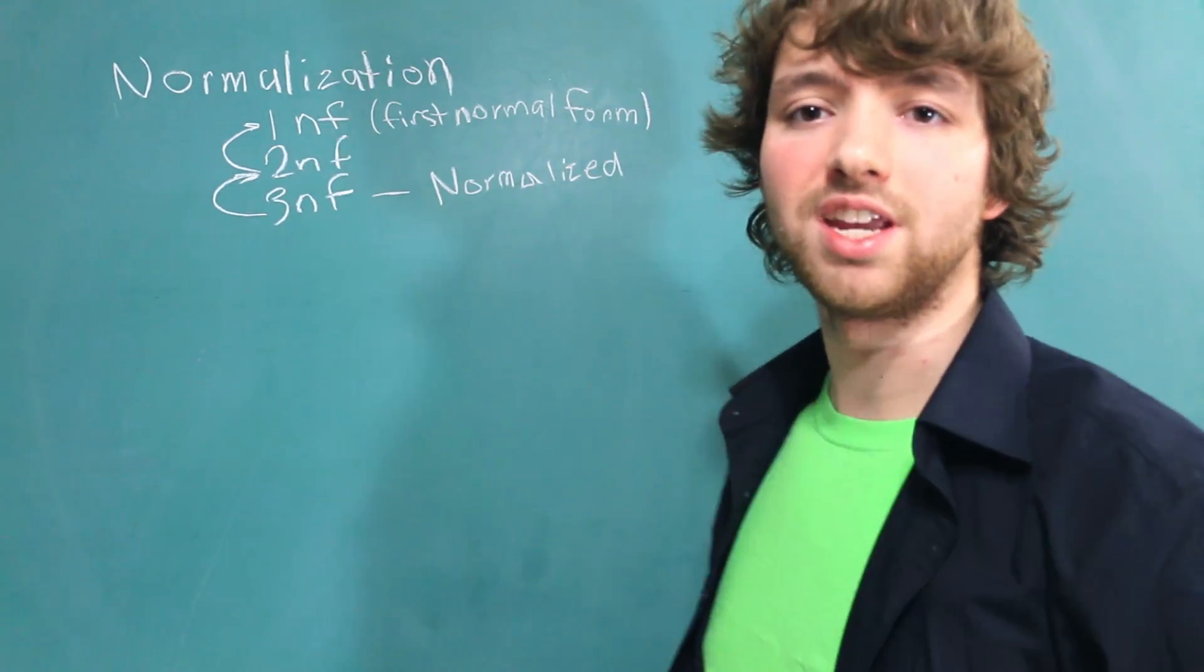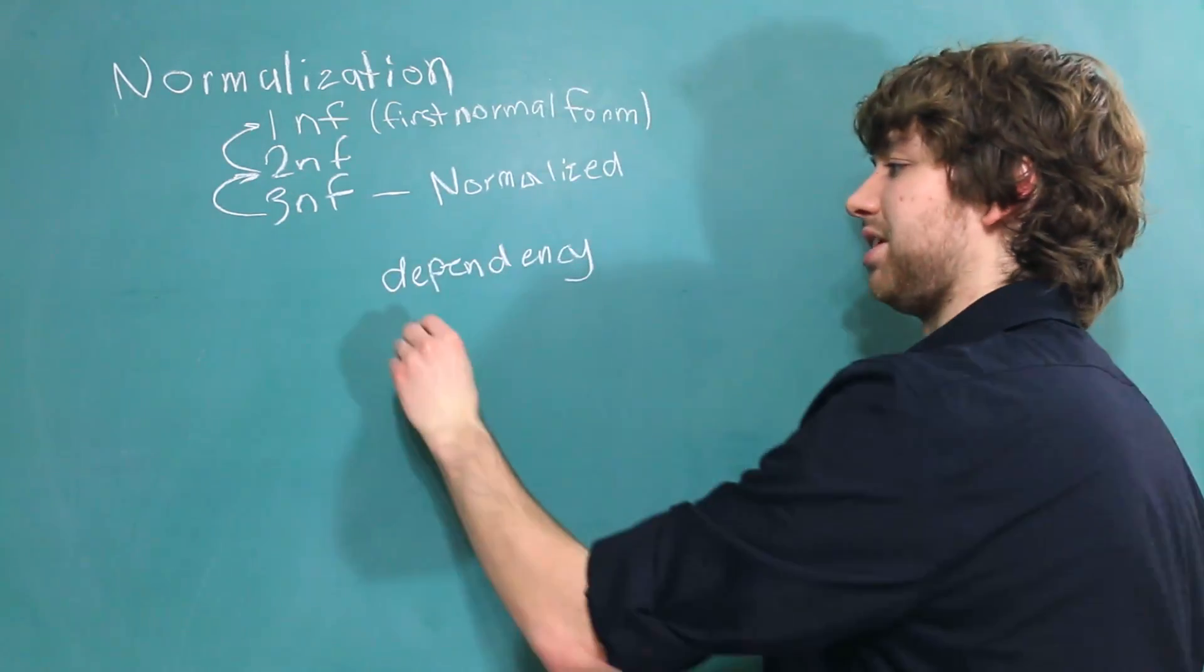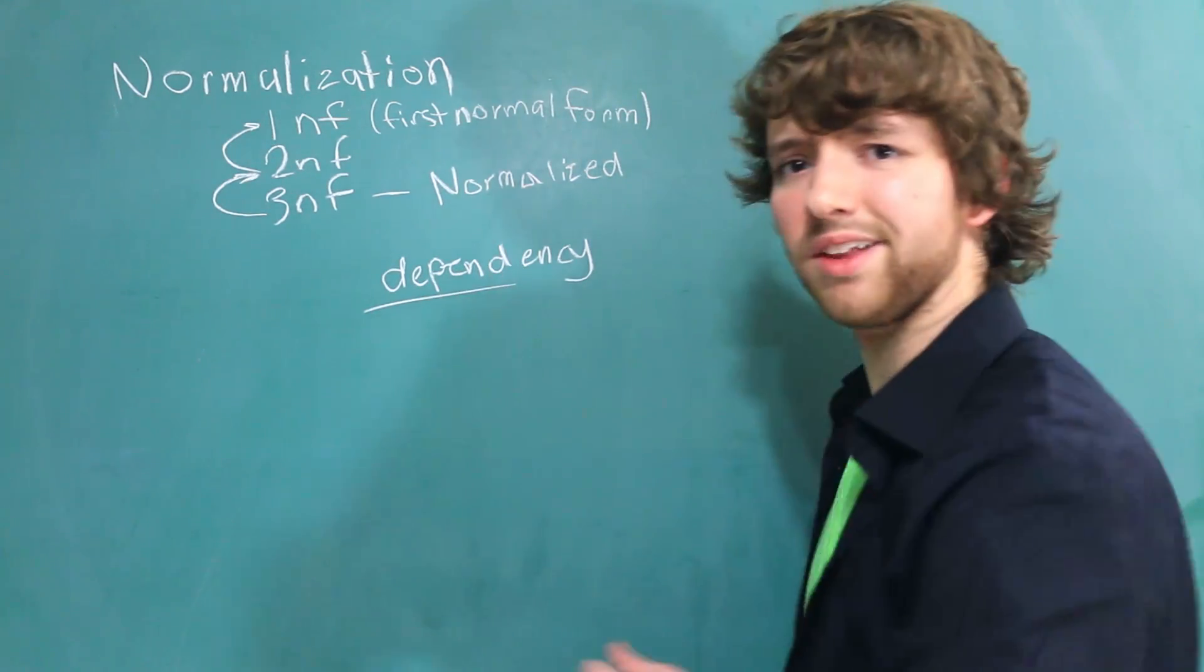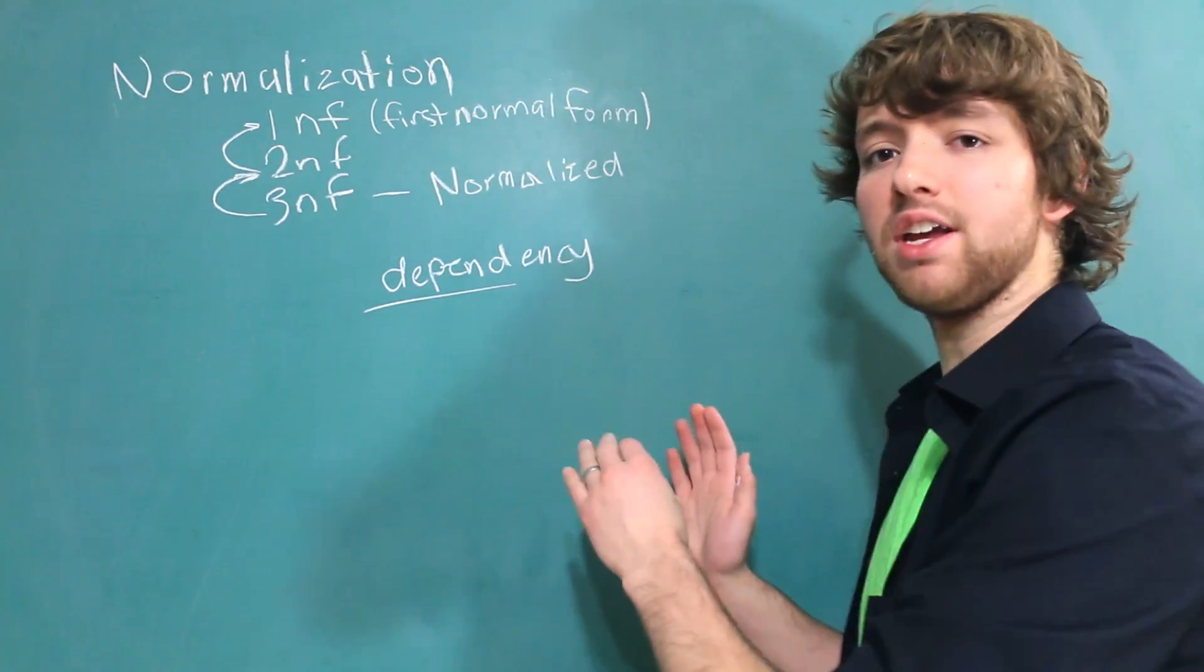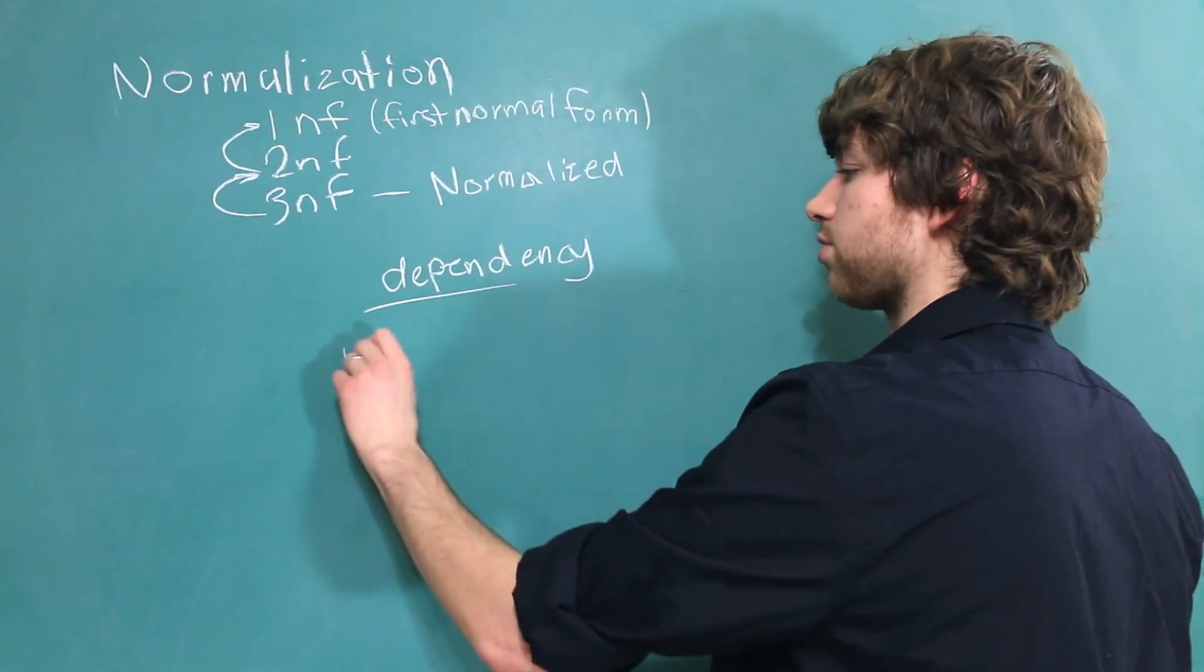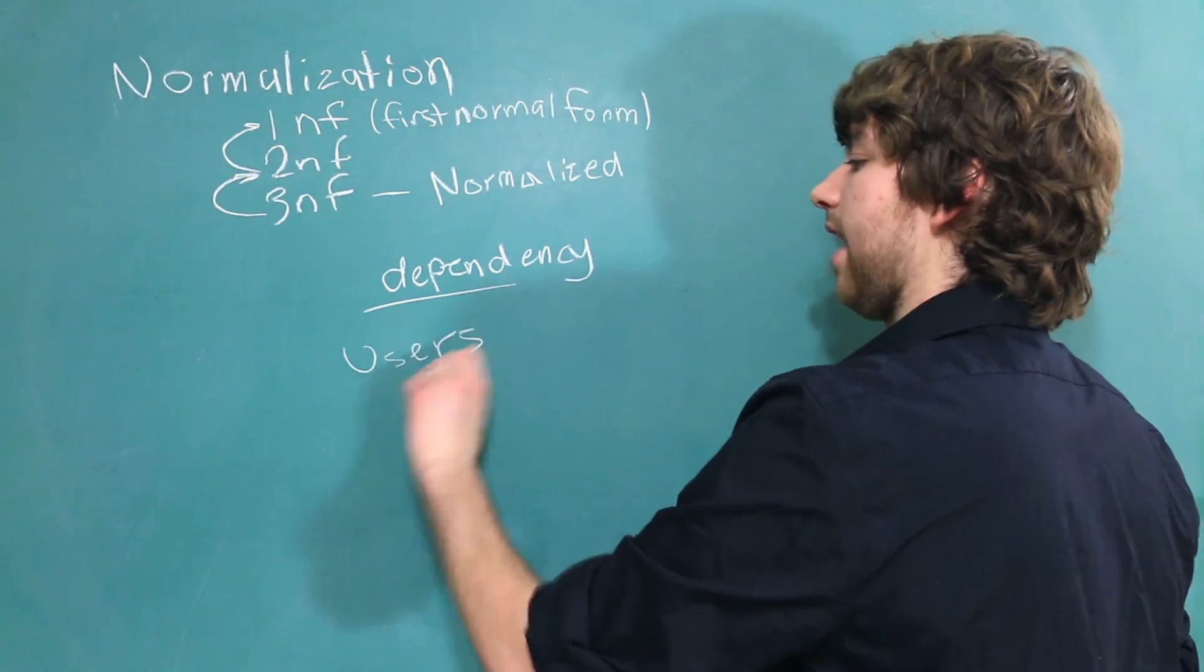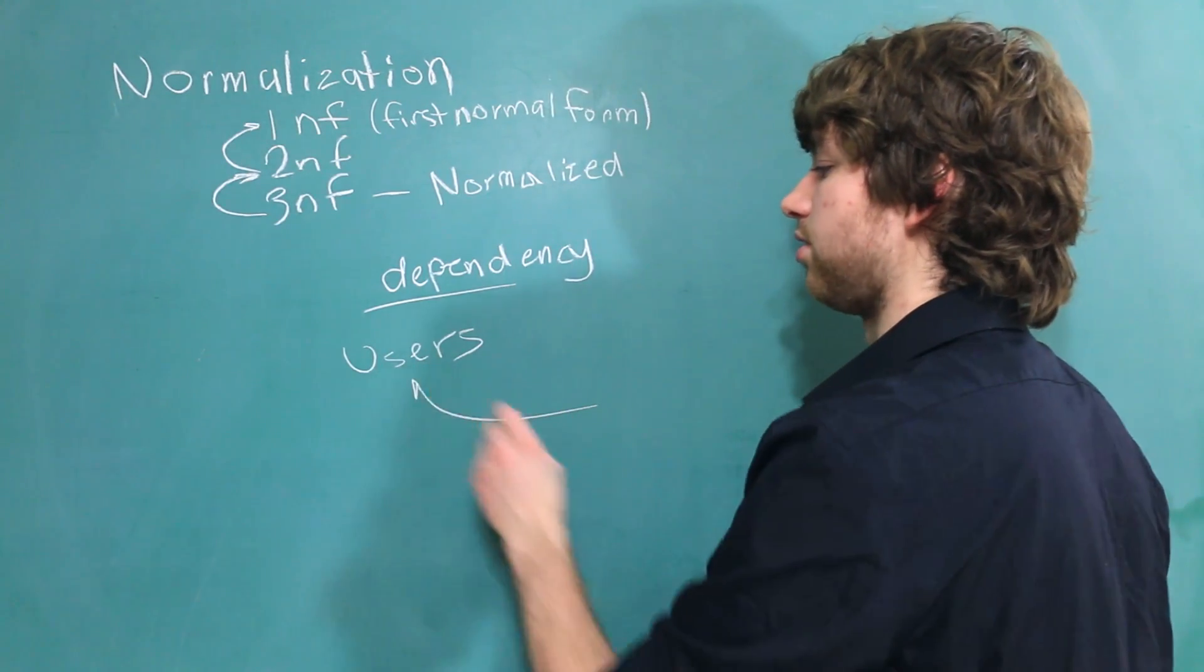Now when you study normalization, you are going to run across the term dependency. This is when something depends, not like the diapers, this is when something depends on something else. Essentially think of a column describing whatever the table is. So a users table, every single column inside of the users table describes this user.